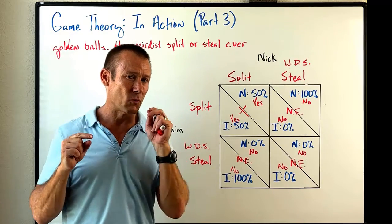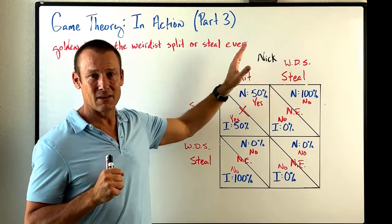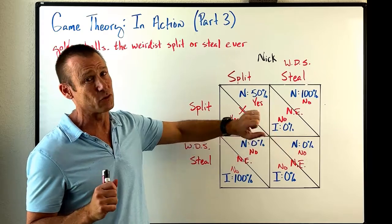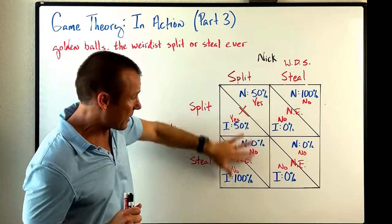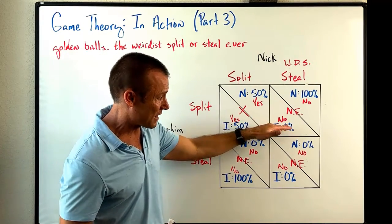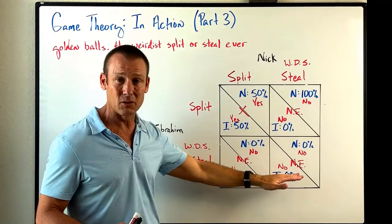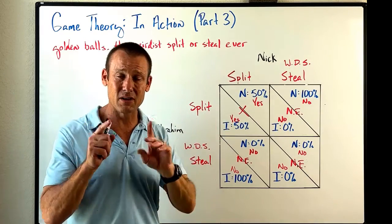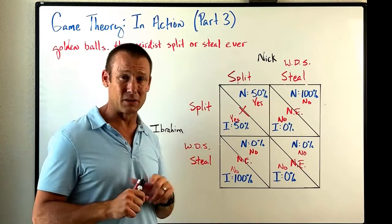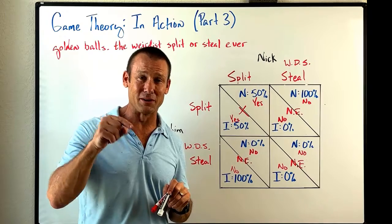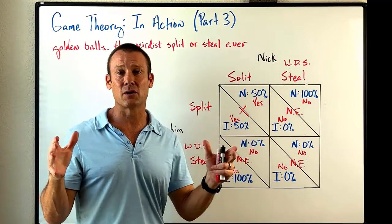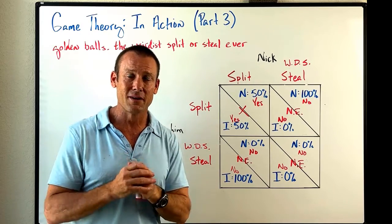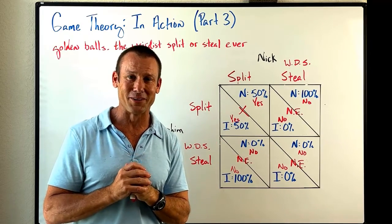The biggest takeaway I want you to get from this whole video is that Nick understood game theory — whether consciously or subconsciously, he understood this payoff matrix really well. He wiped one side out and said: 'Possibility of money, Ibrahim — or no possibility of money.' Ibrahim played split. Nick was confident enough to play split too, and gave us a really good split or steal. Anyway, thank you for tuning in for these seven videos. I hope you enjoyed them and learned something, and we'll see you in another video series. See you.